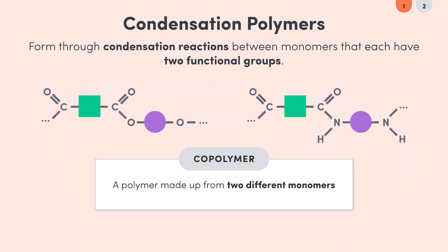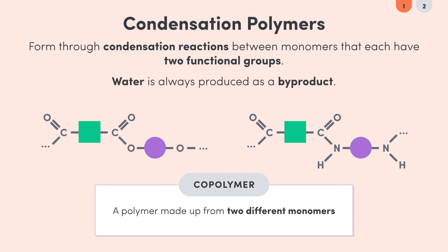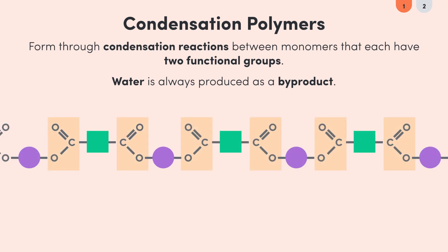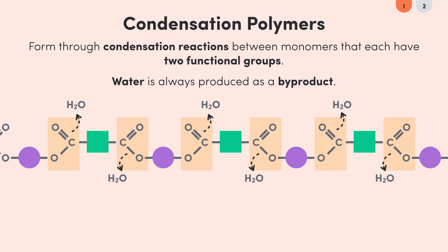They're known as copolymers. And don't forget, since this is condensation polymerization, whether it's a polyamide, polyester, or polysaccharide being formed, water is always going to be produced as a byproduct. So every time a functional group link is formed, a molecule of water is removed from the original functional groups.